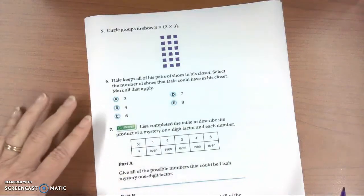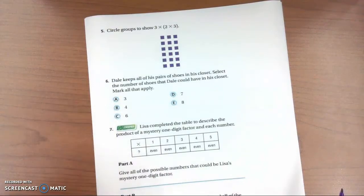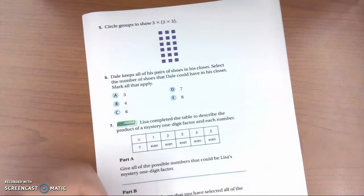This is 3rd grade, Unit 4, Chapter Review, Part 2, which is Problems 5 through 7. So here we go.